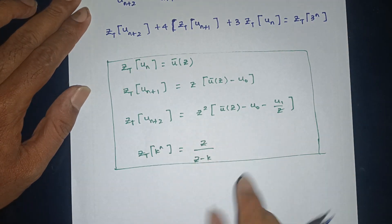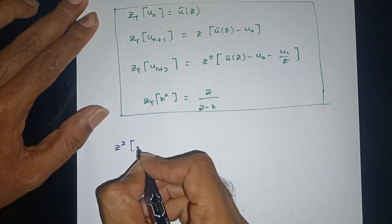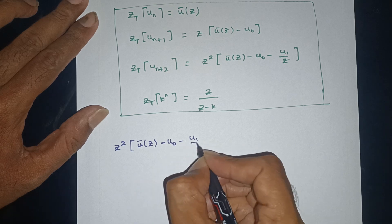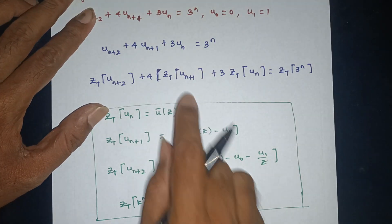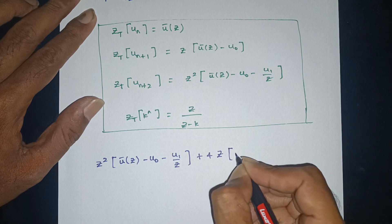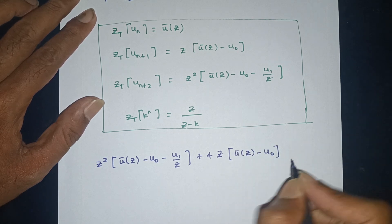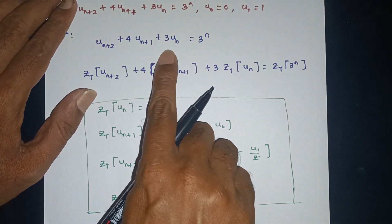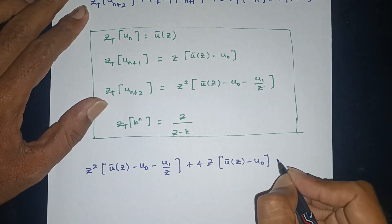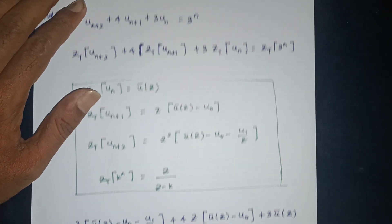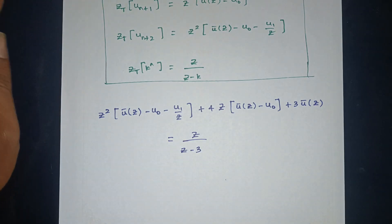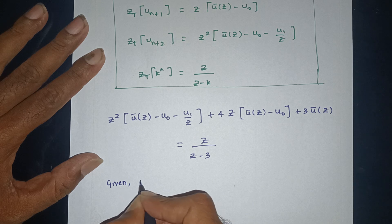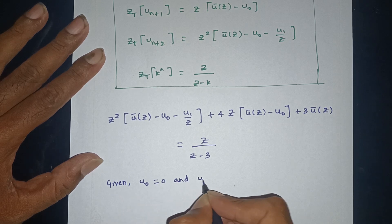Substituting: Z-transform of u(n+2) gives z² times U-bar(z) minus u(0) minus u(1)/z, plus 4 times Z-transform of u(n+1) gives z times U-bar(z) minus u(0), next plus 3 times Z-transform of u(n), and Z-transform of 3^n gives z by (z minus 3). Here u(0) = 0 and u(1) = 1.